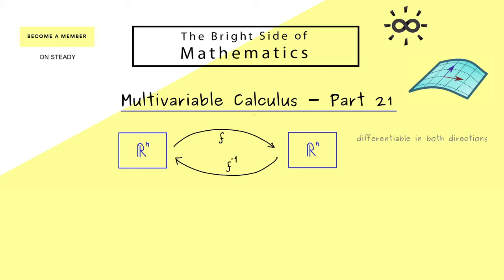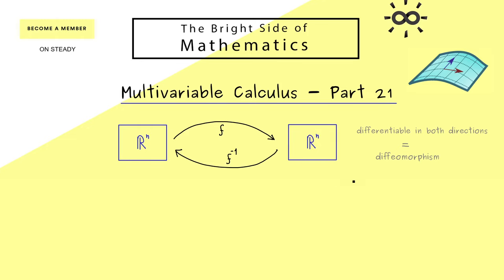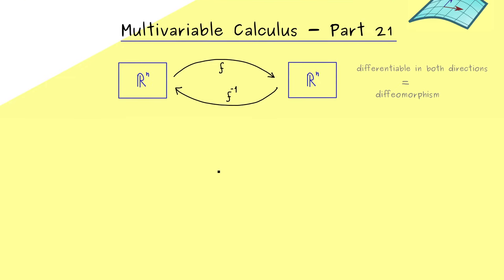In fact, for most properties this is not immediately given, and therefore we introduce some names for some special maps. In that sense you can already remember, if both maps are differentiable, we speak of a diffeomorphism.